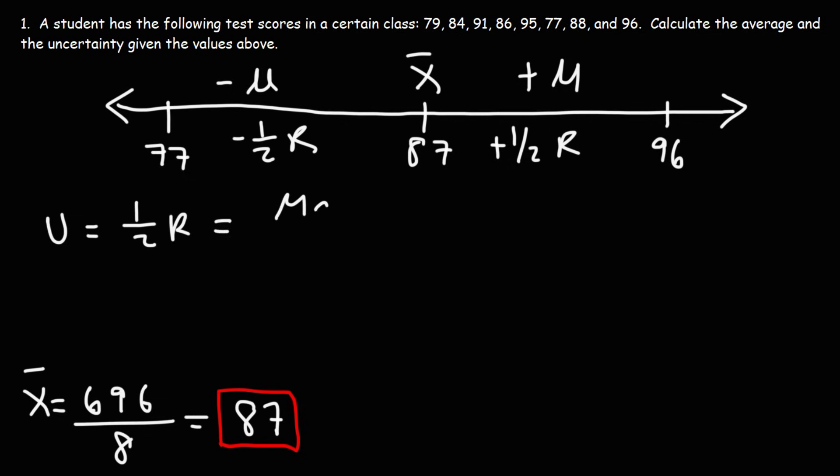The range is the difference between the maximum value and the minimum value divided by two. So in this particular example, our max is 96, our min is 77. So we have 96 minus 77, and we're going to divide that by two.